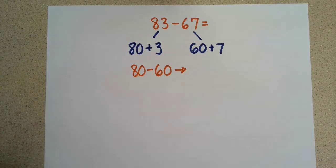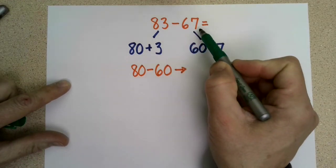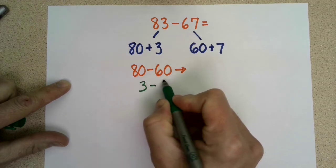Now, the other part, and this is important that we keep track, is that we have 3 minus 7. So let's write it down like this: 3 minus 7.